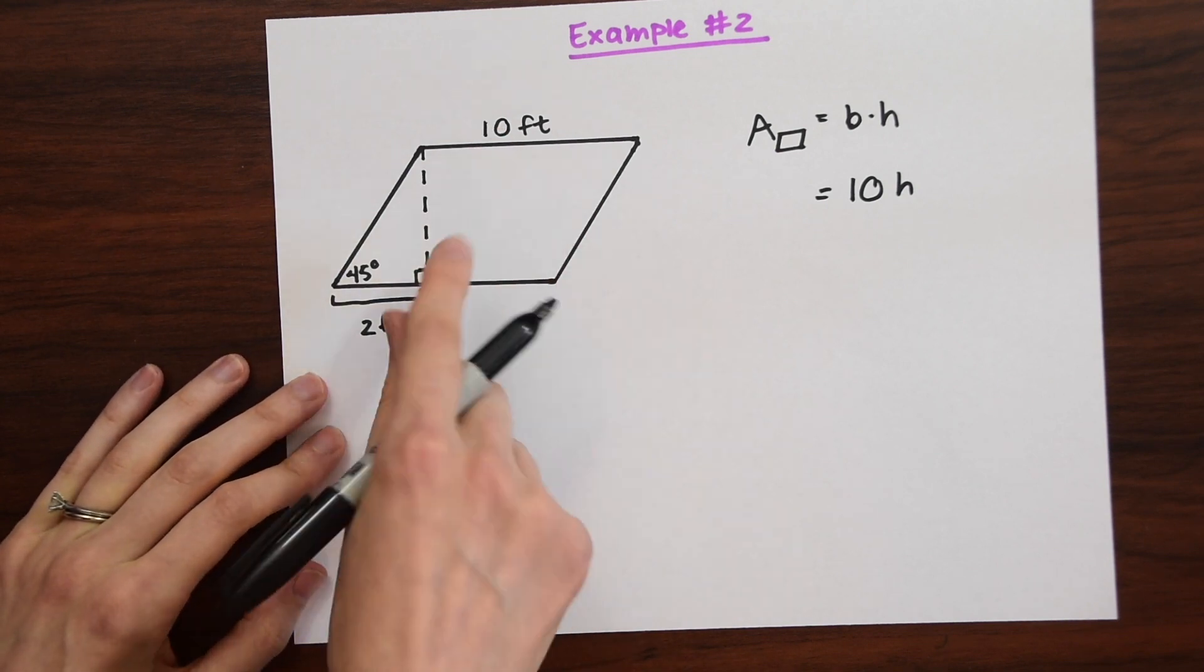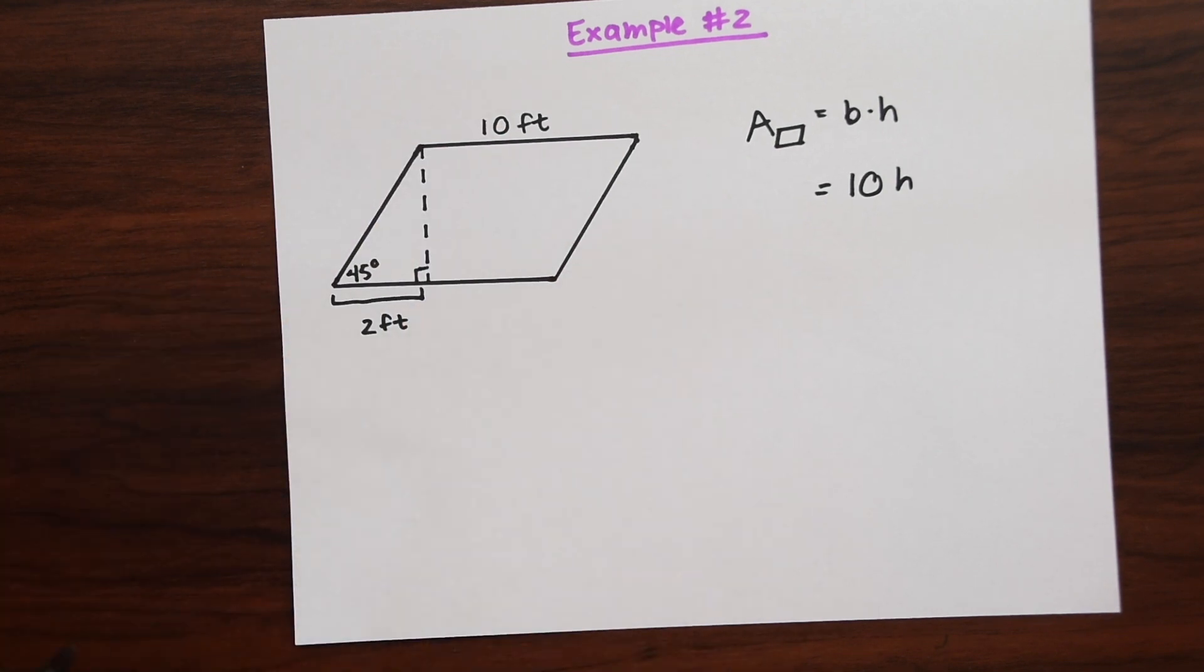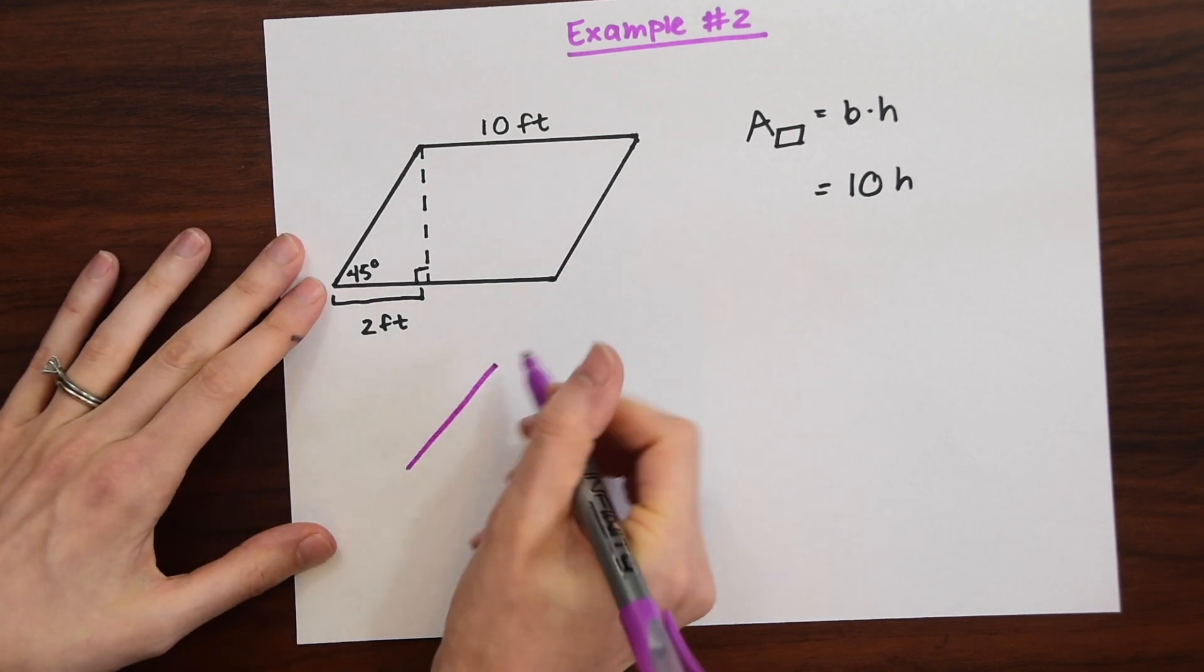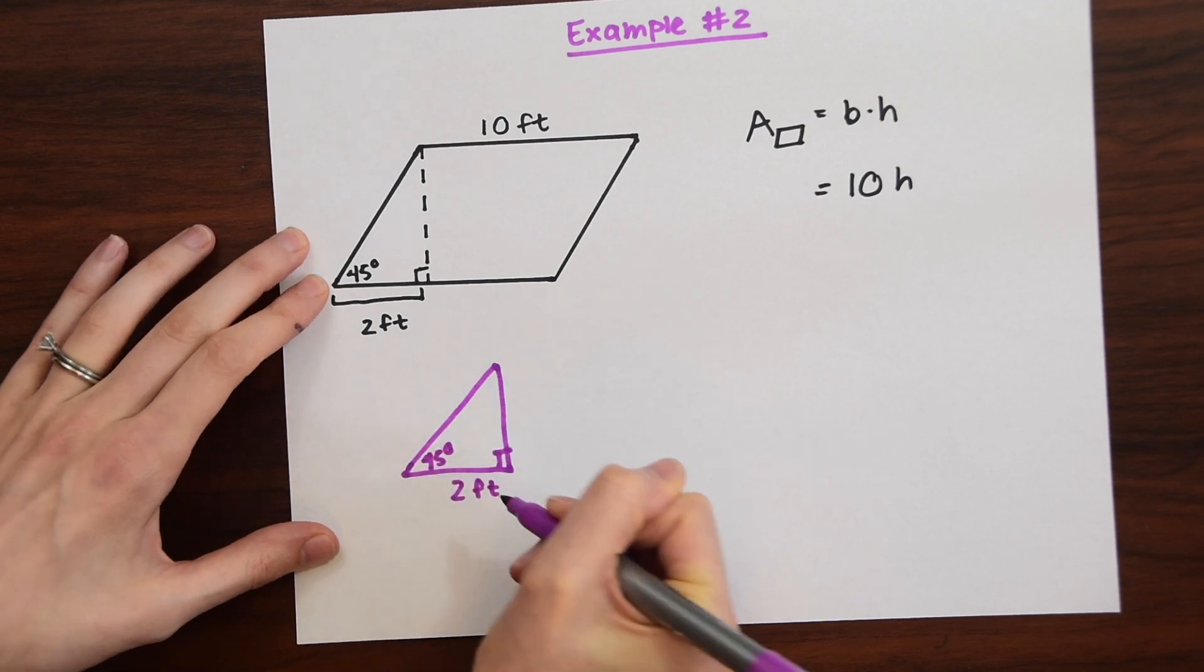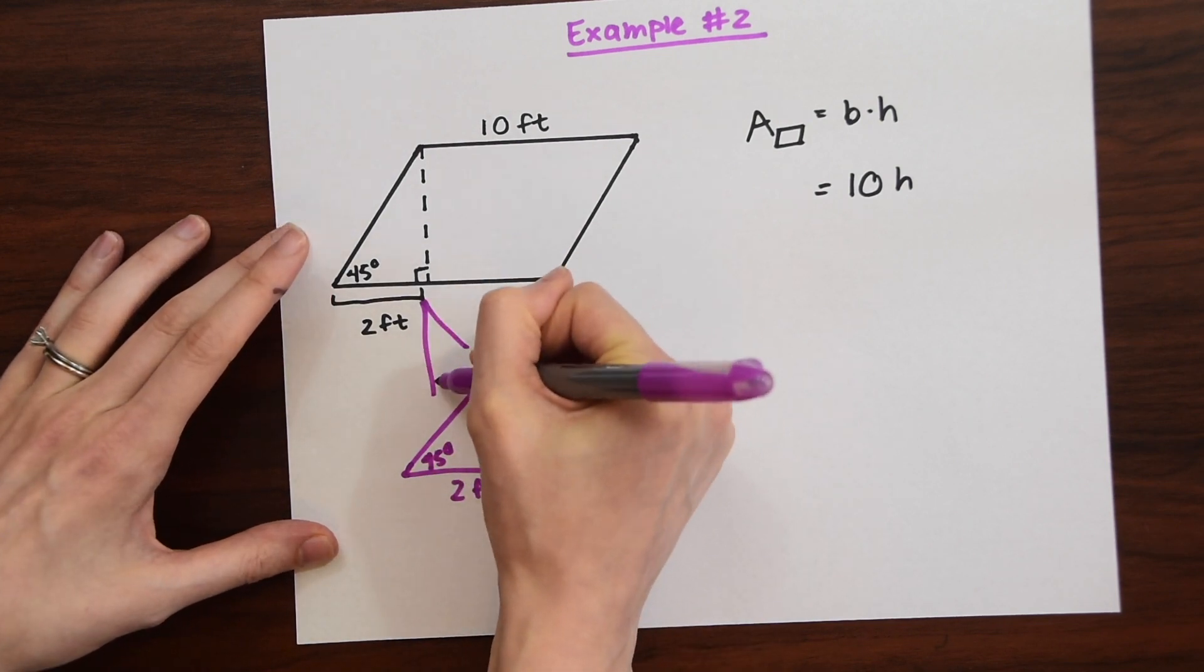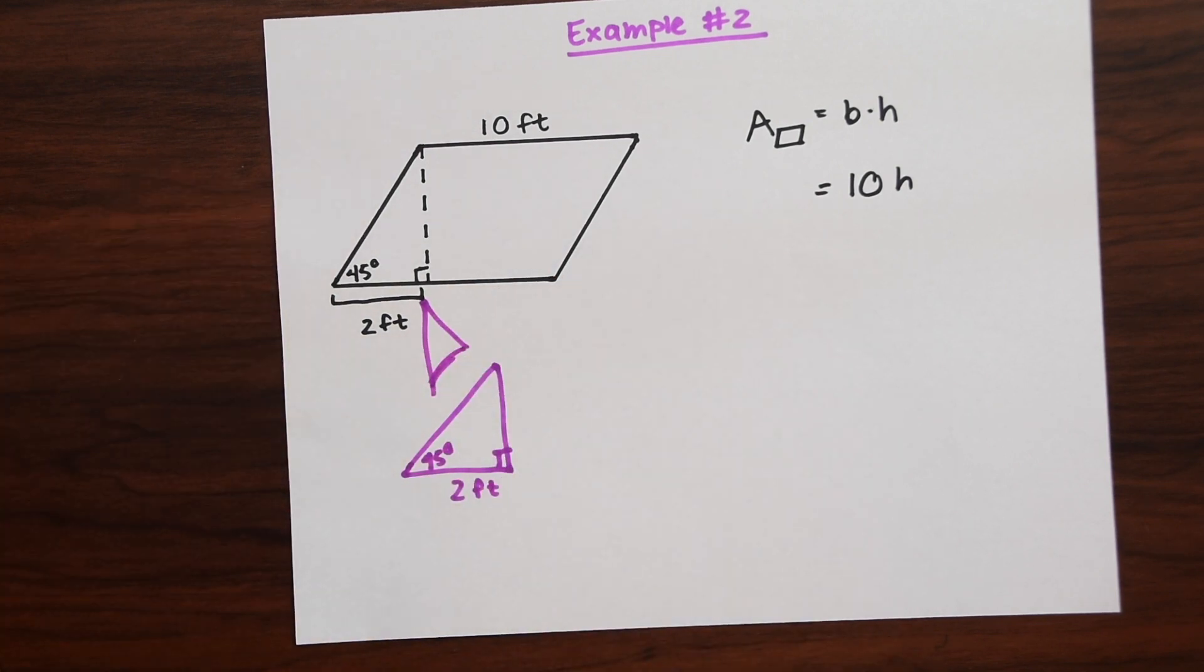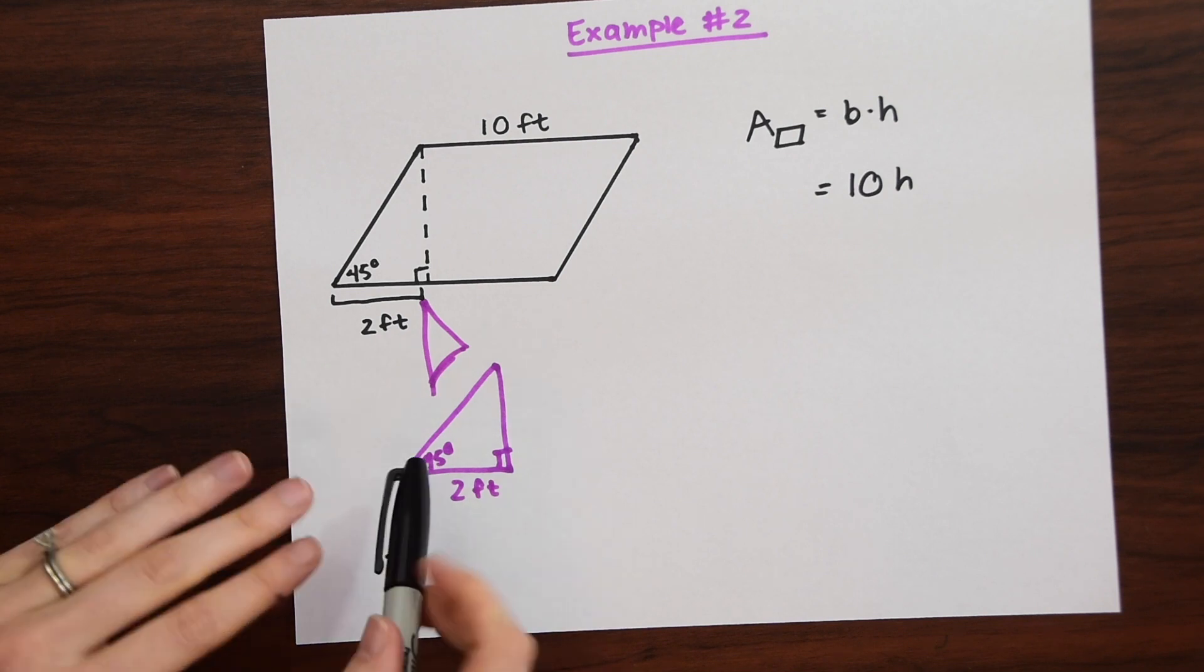And we still need that H though. So to get that what information do we have? We know that we could work with this little triangle right here. So I'm just going to make that bigger. So this is just this enlarged.